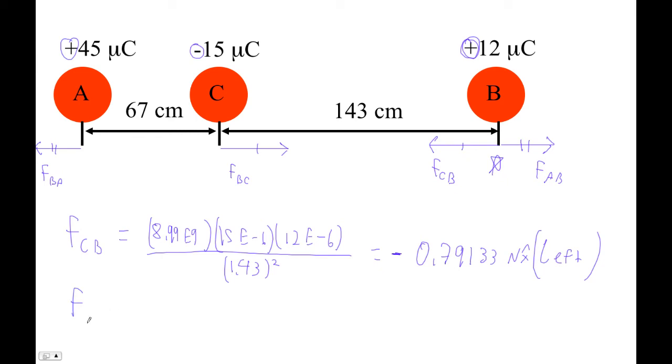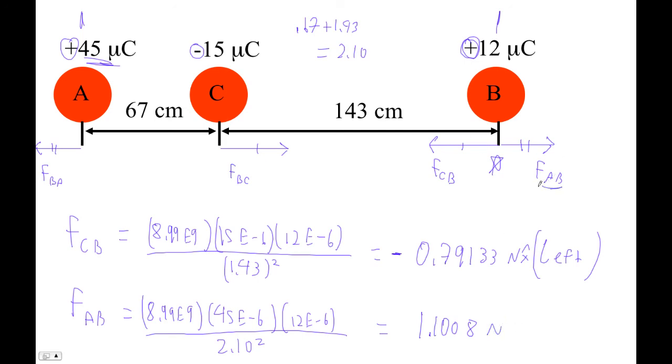And then the force of A on B is going to be 8.99. And then A is 45. I'm just using the charges here. And then B is 12. And then how far is A from B? It is 0.67 plus 1.43 is 2.10. It's this distance here. So this is over 2.10 squared. So let's try that. I'm going to go up, grab the thing I just typed in, change my 1.43 to a 2.10, and then change the 15 to a 45. There we go. And this is 1.1008 Newtons. And this is the force of A on B, so it's to the right. So this would be plus.